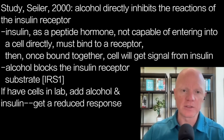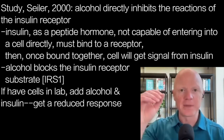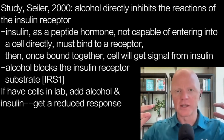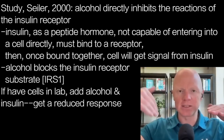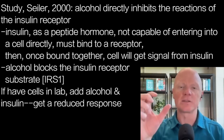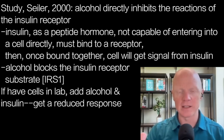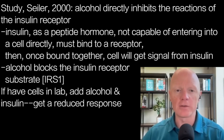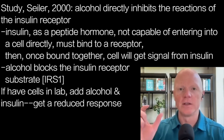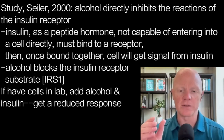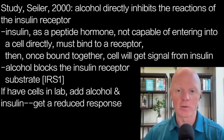Seeler et al. in 2000 published a paper finding that ethanol directly inhibited the actions of the insulin receptor. As we've discussed, insulin being a peptide hormone is not capable of going into the cell itself — it has to bind to a receptor, which then elicits a series of events leading the cell to respond. This paper finds that ethanol disrupts the signal right at the origin, directly blocking effects at the insulin receptor substrate, IRS, specifically IRS-1.